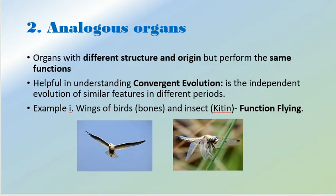The second category under anatomical and morphological evidences is analogous organs. Just opposite to homologous organs, analogous organs perform the same function but have different structure and origin. Homologous organs help us understand divergent evolution, while analogous organs are helpful in understanding convergent evolution.